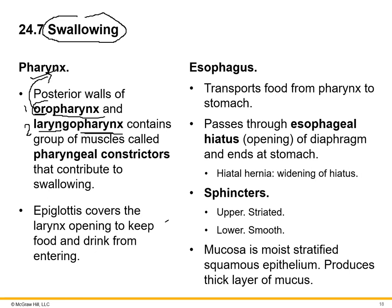Muscles around the throat called pharyngeal constrictors help us swallow. Another structure called the epiglottis shunts food away from the larynx and prevents it from entering the trachea or windpipe. The epiglottis acts like a flap — as you swallow, it covers the larynx and prevents food from going into the airway.